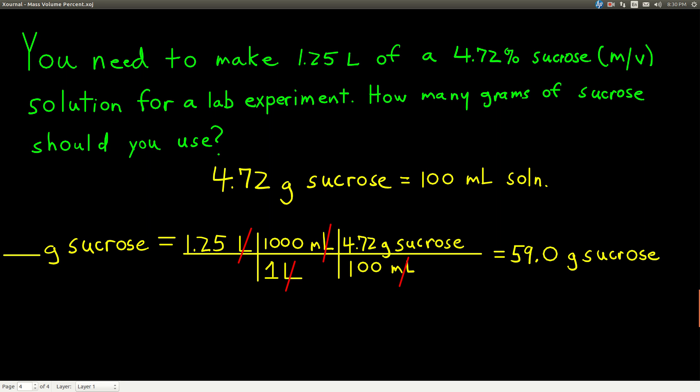And the 1,000 is exact, the 1 is exact, the 100 is exact. We have three sig figs in the 4.72, three sig figs in the 1.25, so we end up with three sig figs. Now, of course, you guys should put this in your calculator. Make sure you get the same answer. And your calculator will probably just give you 59. But because we know we need three sig figs, we put another zero, put a decimal point and the zero. So that's three sig figs, 59.0 grams of sucrose.